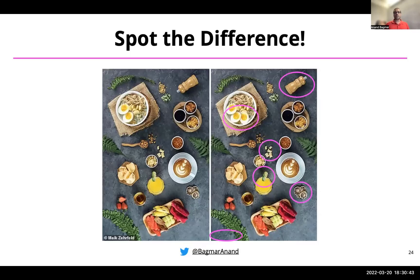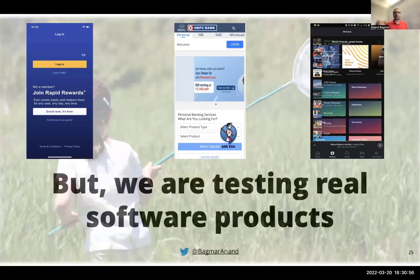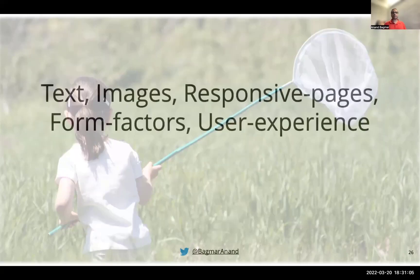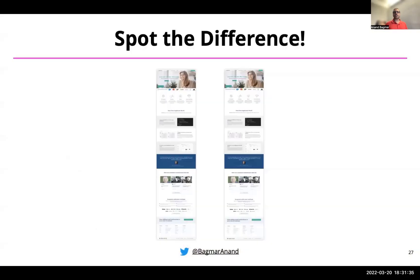If I give you five seconds to look at two images and ask you to quickly identify five differences, let's see how many you can find. Here are the images — wait five seconds. Hopefully you got all of them. There were actually six differences, not five. This is relevant because we are testing software products, which are different from static images. Software products have text, images, responsive design, different form factors, different user experiences. The product under test has context — it's dynamic, not a static site.